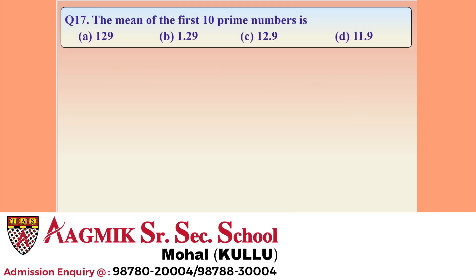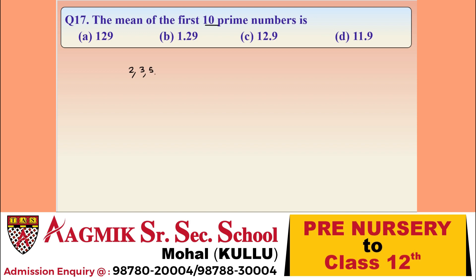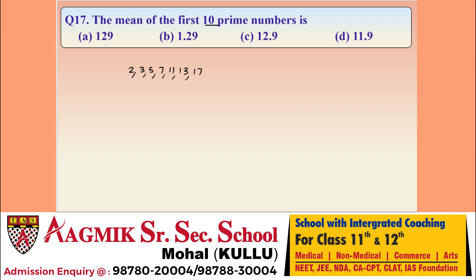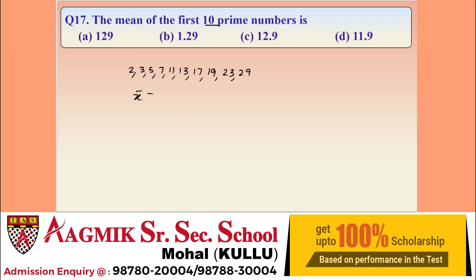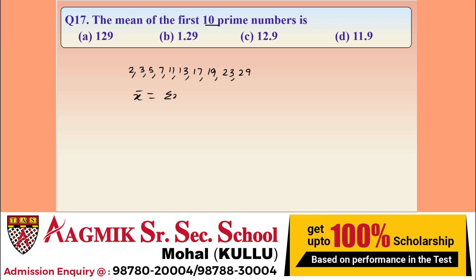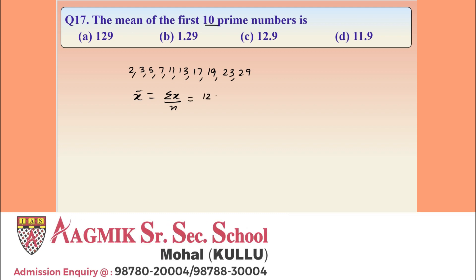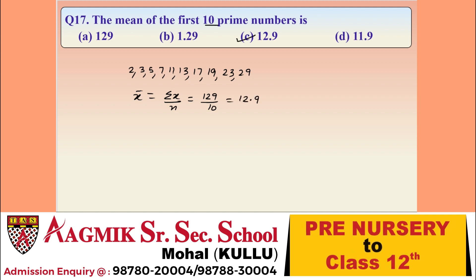Question 17: find the mean of the first 10 prime numbers. The first 10 prime numbers are 2, 3, 5, 7, 11, 13, 17, 19, 23, and 29. Their sum is 129 and the number of observations is 10. Mean = 129/10 = 12.9. Option C is correct.